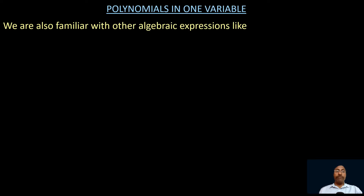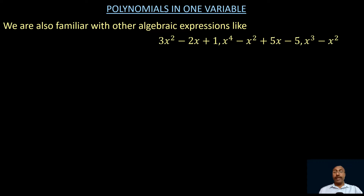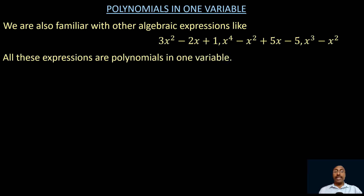We are also familiar with other algebraic expressions like 3x square minus 2x plus 1, x power 4 minus x square plus 5x minus 5, x cube minus x square, etc. All these expressions are polynomials in one variable, since each expression contains only one variable, x.